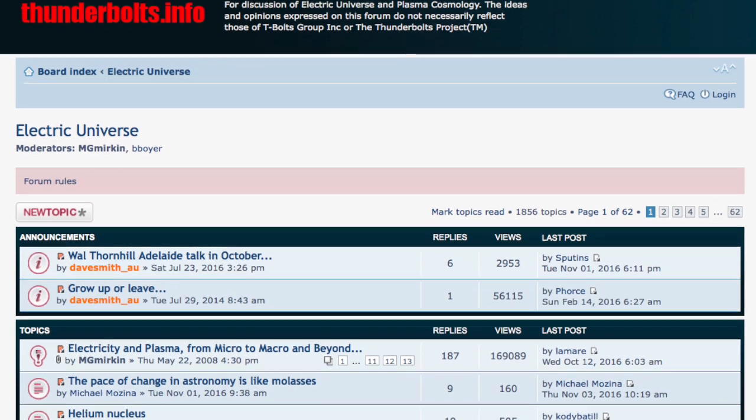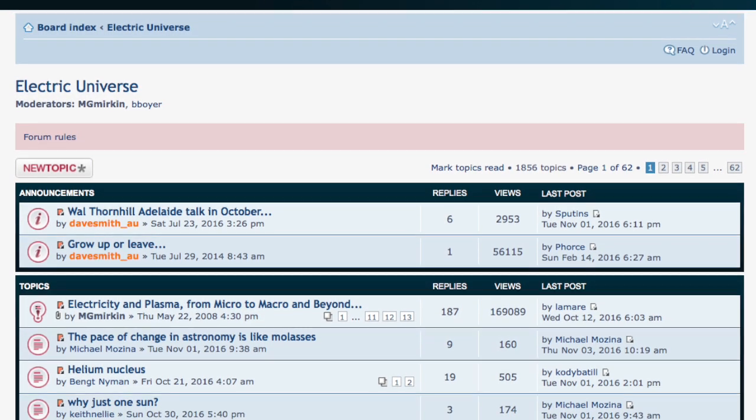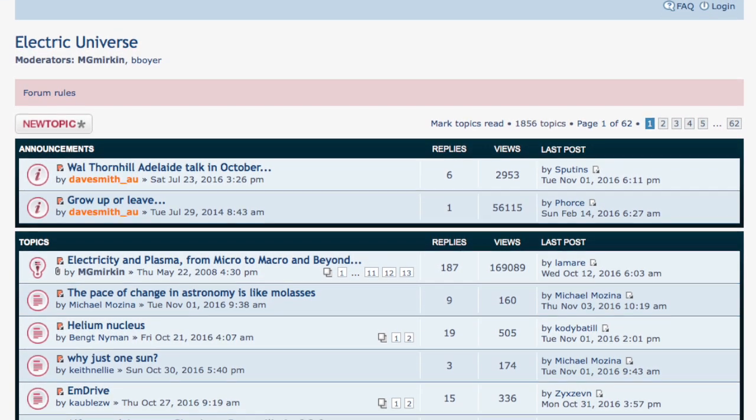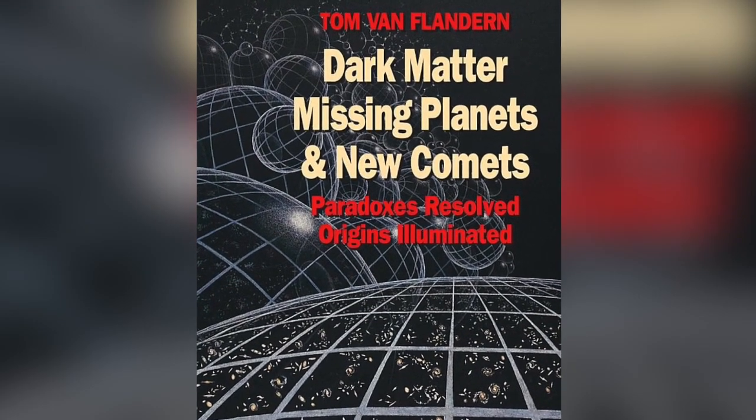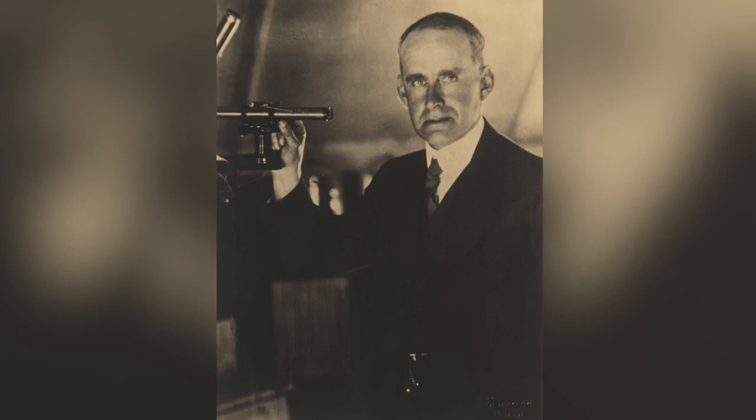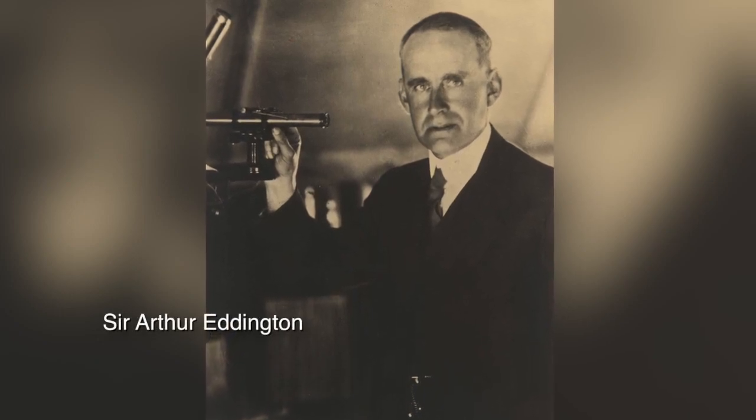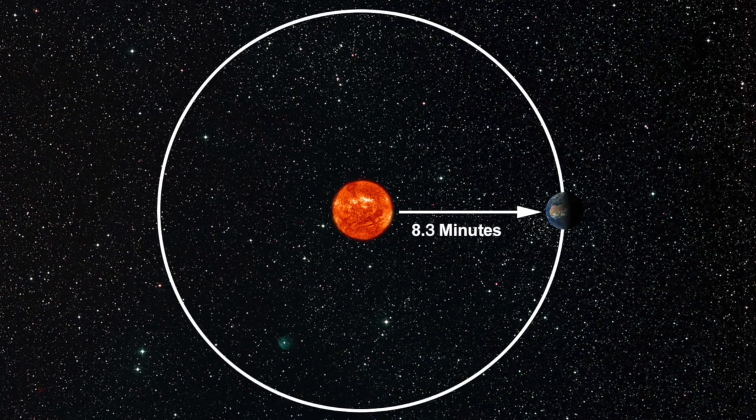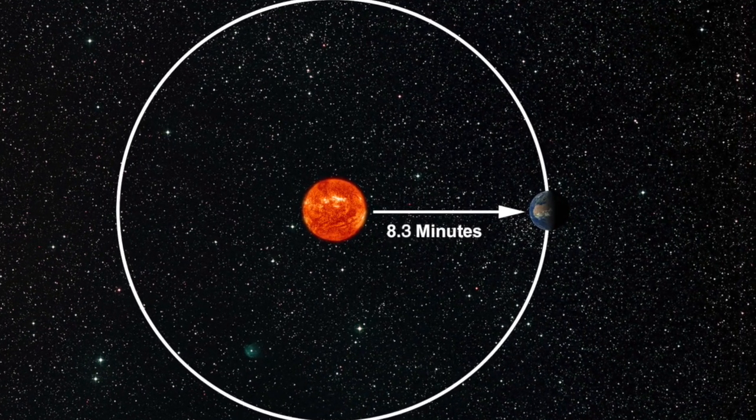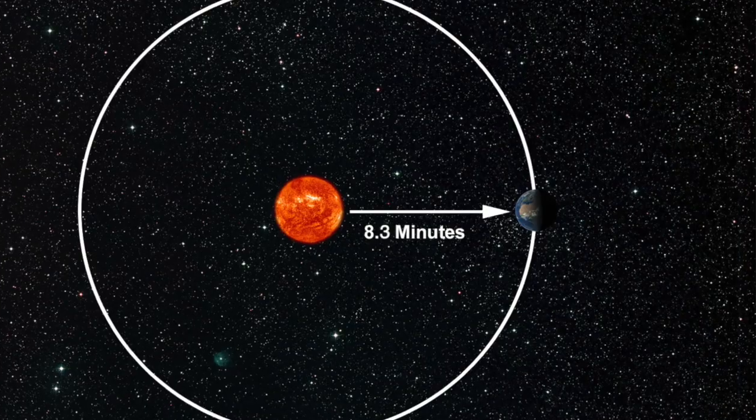The issue was very well dealt with in the Thunderbolts Forum of October 22, 2016, in which reference was made to work by Tom van Flandern in which Sir Arthur Eddington was quoted as having exposed by 1920 the issue in terms of the couple which a light speed gravity between Sun and Earth would exert.